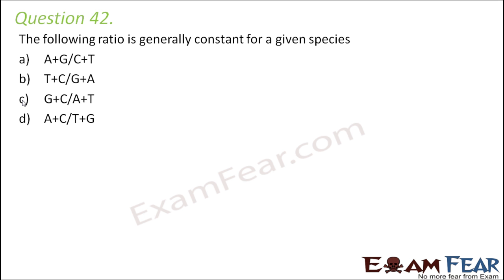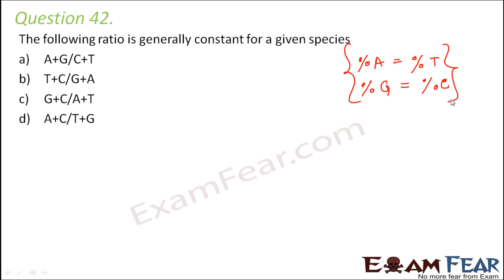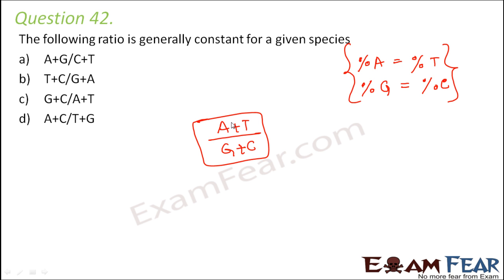Question number 42. The following ratio is generally constant for a given species. As we all know by now, as per the base pairing rule, the percentage of adenine is always equal to the percentage of thymine. Similarly, the percentage of guanine is always equal to the percentage of cytosine. So the ratio that remains constant is A plus T divided by G plus C, because A and T pair up together, and G and C pair up together, and their respective percentages are the same.